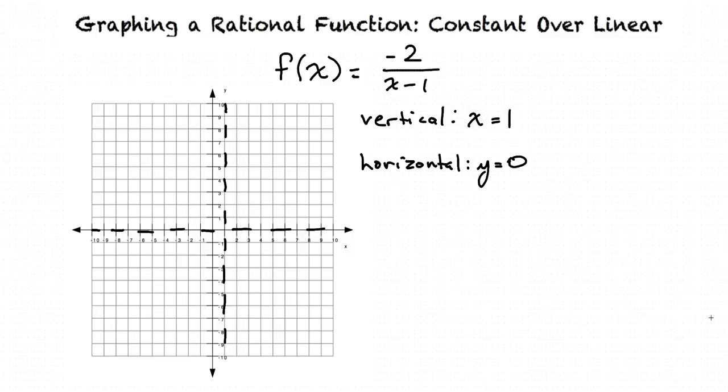In other words, the asymptotes help us understand the function beyond the scope of our graph. So they're dashed because they are really just there to help us draw our graph better? Exactly.